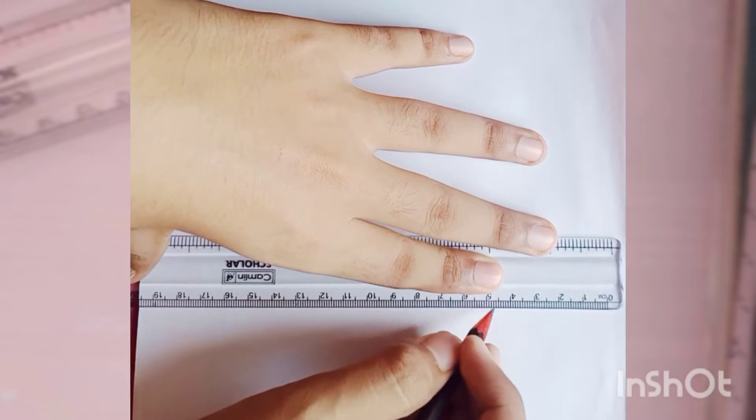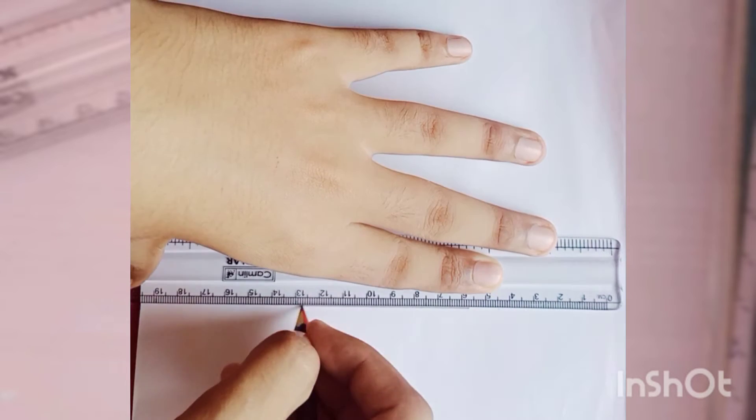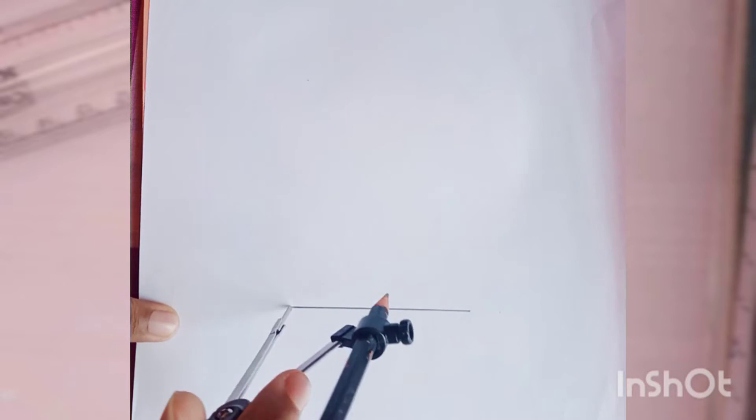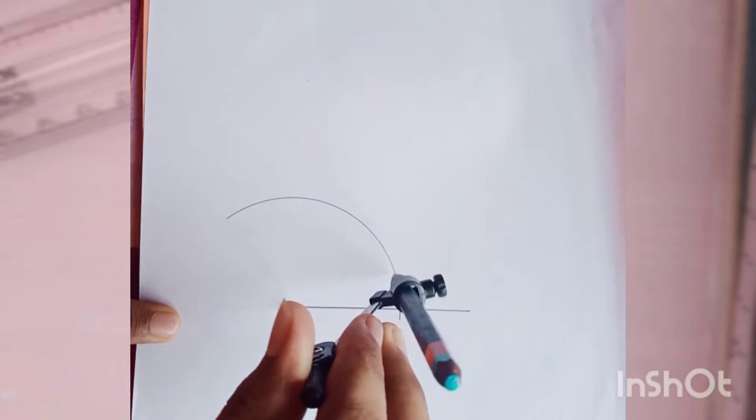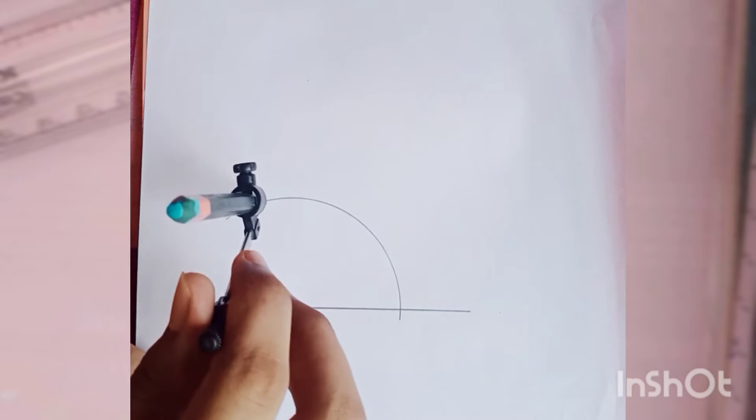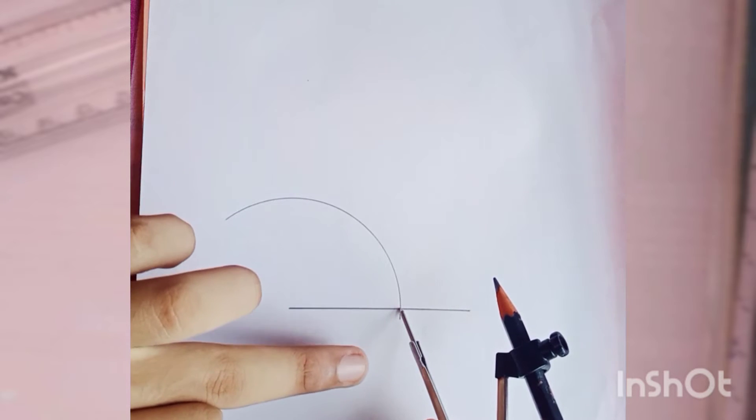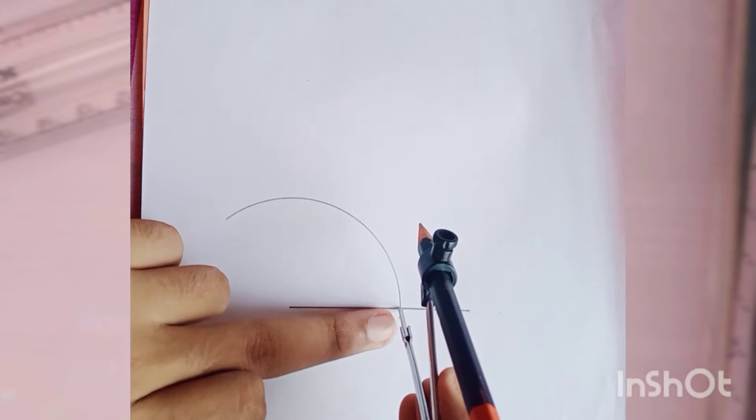line segment of any measurement. Then we have to cut an arc, as we have done in the 30 degree video. Measurements for all arcs should be equal. We put the needle at one point, cut an arc, then keep the same needle on the arc which cuts the same line. At that point we keep the needle and cut an arc.